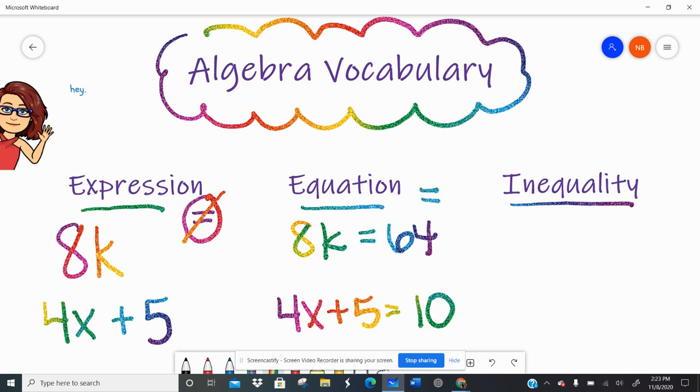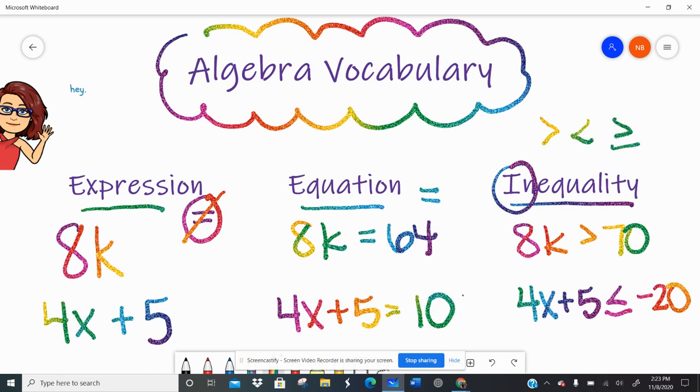With an inequality, right? Not equal, not an equal relationship. Inequalities have inequality signs, like 8k is greater than 70. Or 4x plus 5 is less than or equal to negative 20, right? So inequalities have inequality signs, greater than, less than, greater than or equal to, less than or equal to.